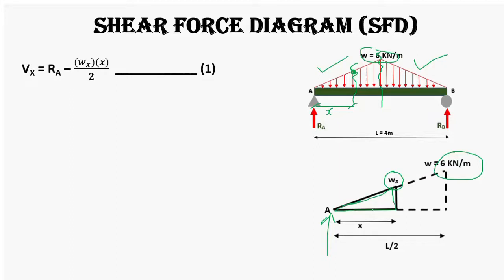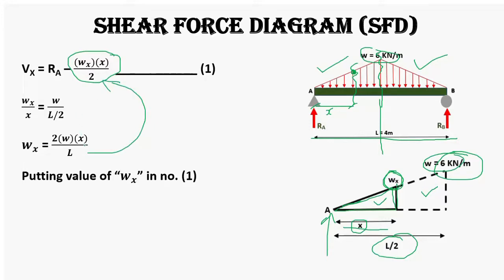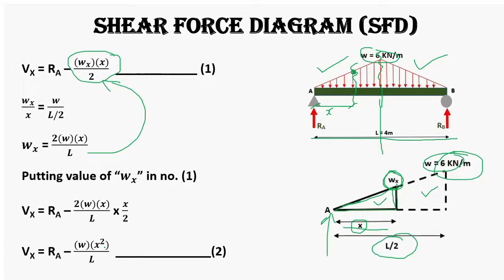The total triangular load is calculated using the area of the triangle: half base into height, where base is x and height is Wx. To find Wx, we use the concept of similar triangles — comparing the smaller triangle (perpendicular Wx over base x) to the larger triangle (W over L/2, since total length is L and the half is L/2). This gives Wx = 2Wx/L. Substituting into equation one, the general shear force equation simplifies to: V = RA − Wx²/L.